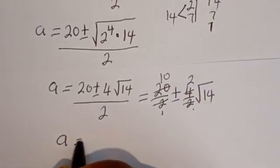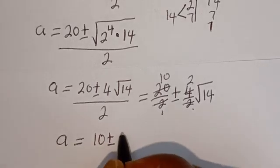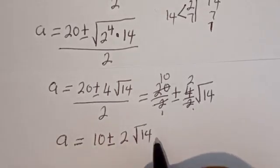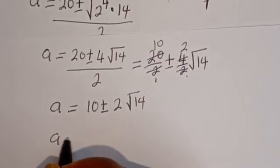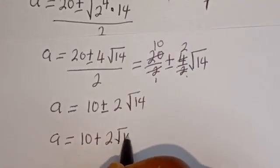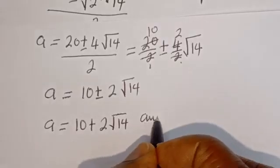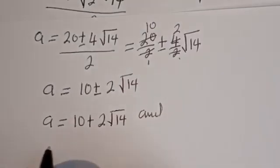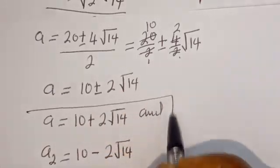Therefore A equals 10 plus or minus 2 root 14. So A₁ is equal to 10 plus 2 root 14, and A₂ is equal to 10 minus 2 root 14. These are the values of A.